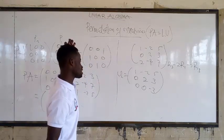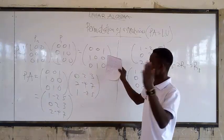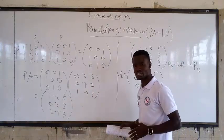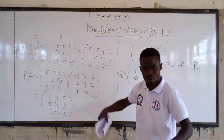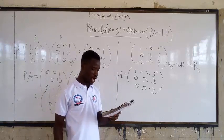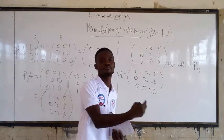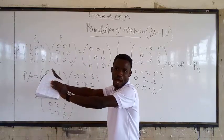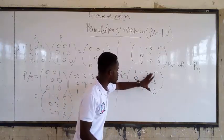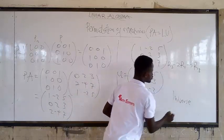Someone might say this upper triangular matrix is the same as before — yes, you'll find it often is. The process is: from the original matrix, find the upper triangular form to get your permutes, form the P matrix, multiply P by A, then take the upper triangular matrix again. That gives you U.